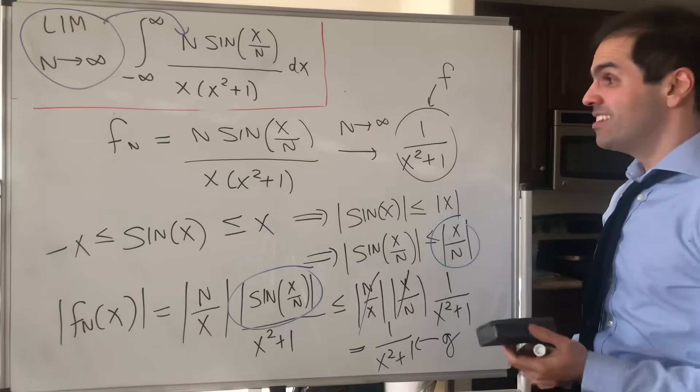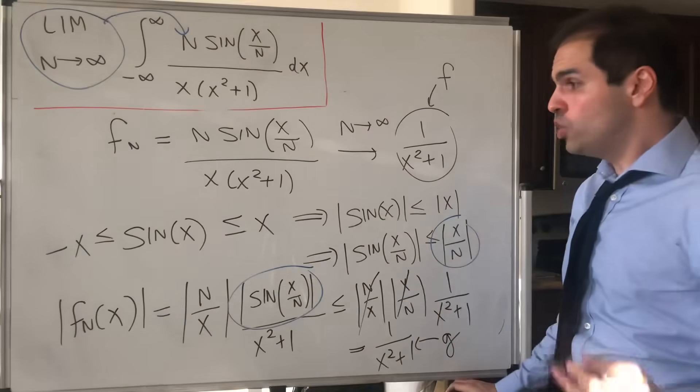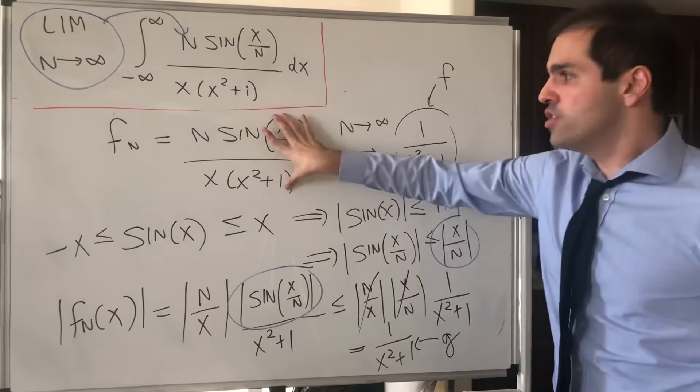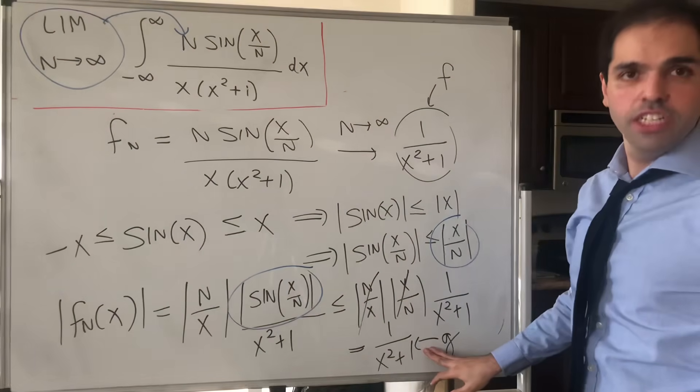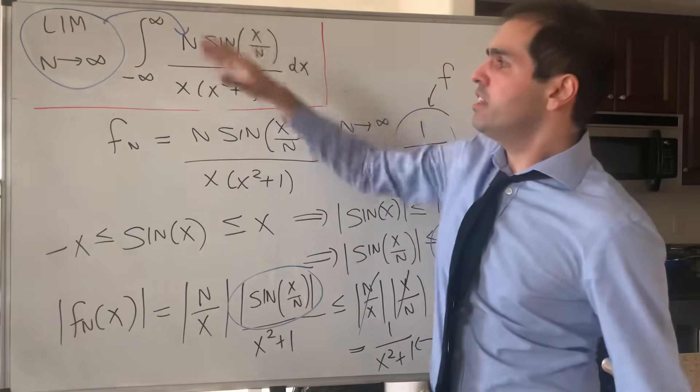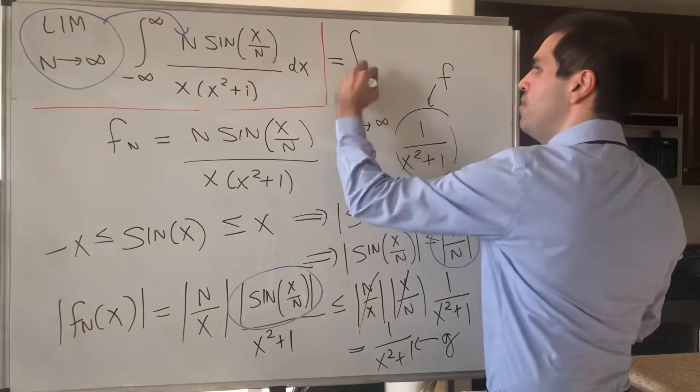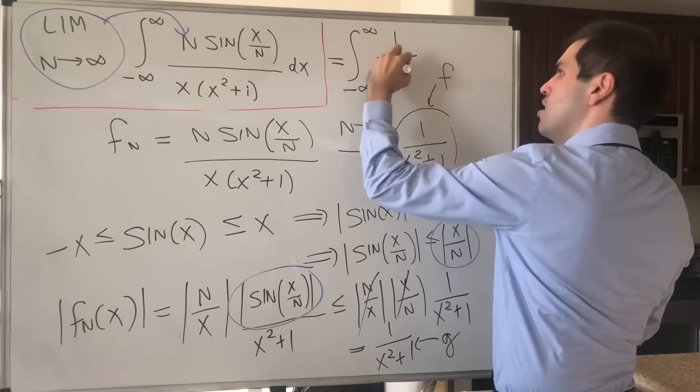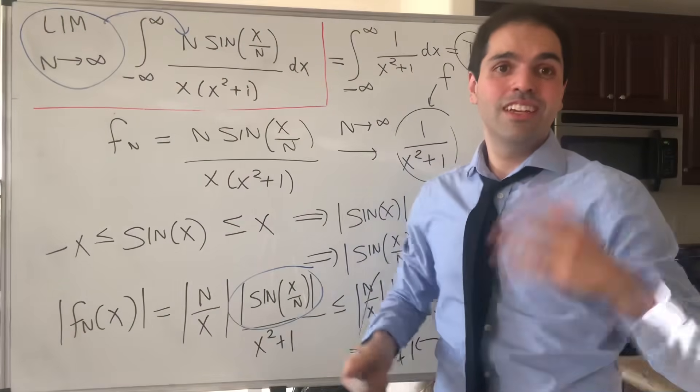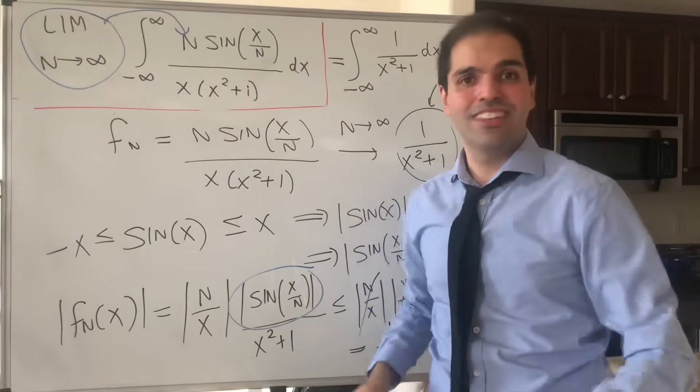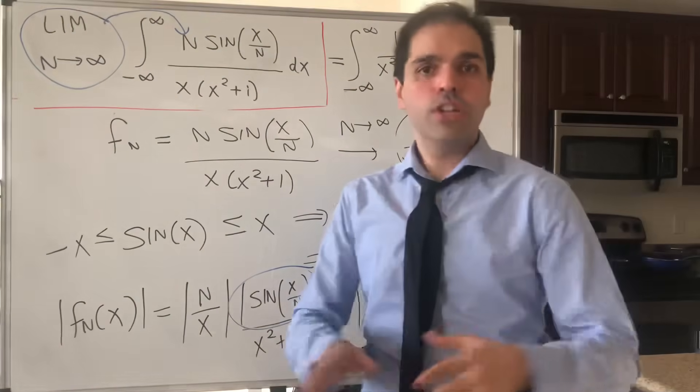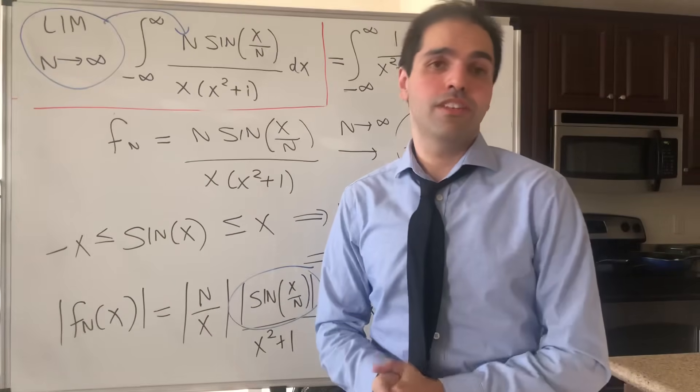So in other words, our functions fn are dominated by this function g, but we've shown, actually by coincidence, that the integral of g is finite, it's just pi. So in the end, we do get that those functions converge pointwise to this function, and they're dominated by an integrable function g, and therefore, by what we had before, the limit of the integrals is just the integral of the limit function, which is pi. So rigorously, I've shown that you calculate that integral, and you can pass to the limit. And it's all because of the beauty of the dominated convergence theorem, which makes things very simple to verify.